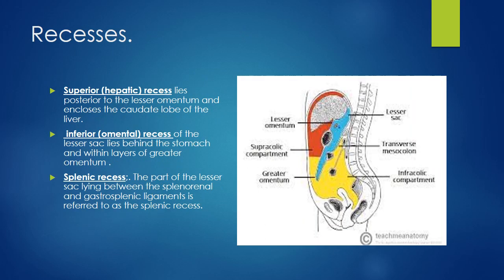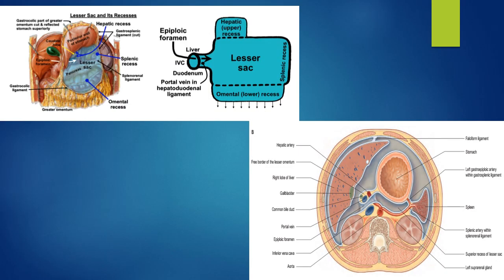The superior recess, also called the hepatic recess, lies posterior to the lesser omentum and encloses the quadrate lobe of the liver. The inferior, or omental, recess of the lesser sac lies behind the stomach and within the layers of the greater omentum. The splenic recess is the part of the lesser sac lying between the splenorenal and gastrosplenic ligaments. In another diagram we can see the recesses in simple form: above the fold is the hepatic or upper recess, below is the inferior or omental recess, and this is the splenic recess. When we raise the stomach and see the posterior wall of the lesser sac, we can see the splenic recess between the two ligaments.